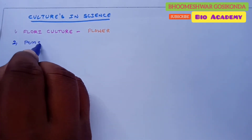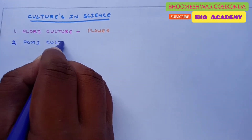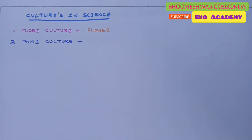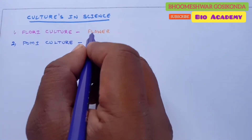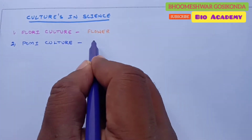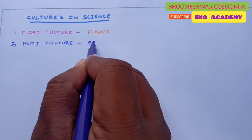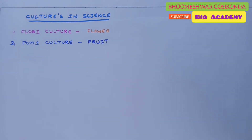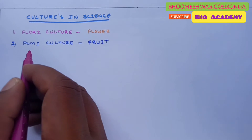The second type of culture is called pomiculture. Pomiculture is the growing or cultivation of a particular category of plants — specifically fruits. So pomiculture is suitable for fruit cultivation.